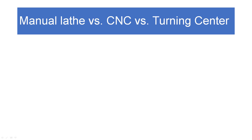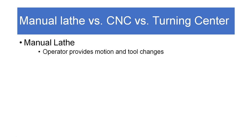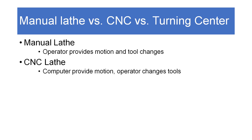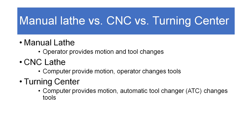What's the difference between a manual lathe, a CNC lathe, and a turning center? On a manual lathe, the operator provides all the motion and all the tool changes, sometimes guided by a digital readout. On a CNC lathe, a controller and computer provide motion, but the operator still has to change the tools. When we advance to a turning center, the computer provides motion and also changes tools using an automatic tool changer. The key takeaway: to move from a CNC lathe to a turning center, you add an automatic tool changer — that's what makes it a turning center.